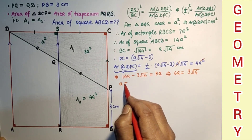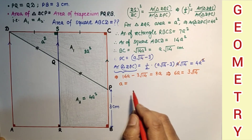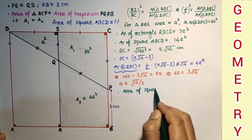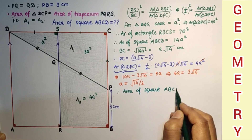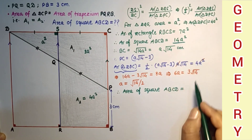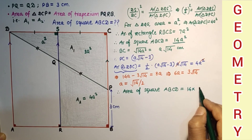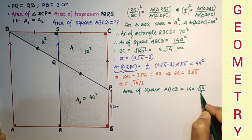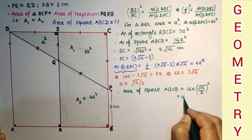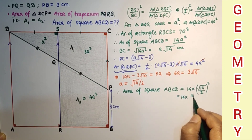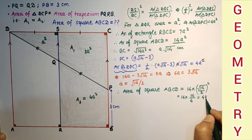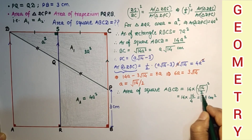Finally we can say A equals root 14 divided by 2. Therefore, area of square ABCD is equal to 14A squared. So 14 into A squared is 14 into root 14 by 2, all squared, which equals 14 into 14 by 4, which is 49 centimeters squared. This is the answer.